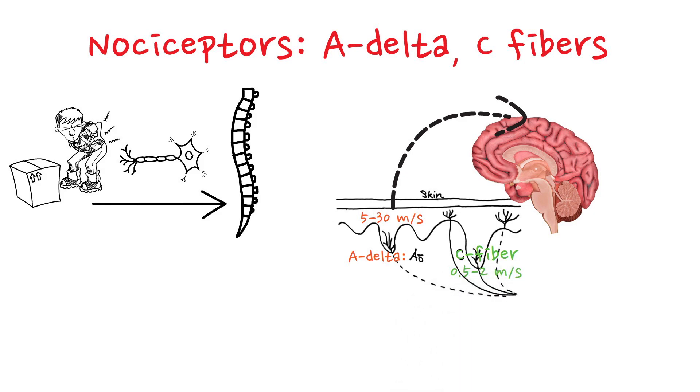C fibers are responsible for transmitting dull, throbbing and diffuse pain, often referred to as slow pain. C fibers' signals terminate mainly in the brainstem and forebrain, with their remaining impulses connecting with a diffuse network of neurons.